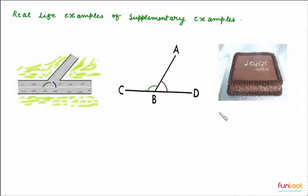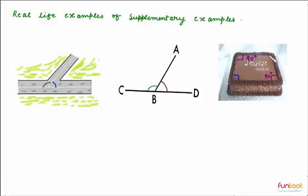Here we have a mouth-watering chocolate cake. The shape of this chocolate cake is a square, and all angles of a square are 90 degrees. So this angle and this angle will each be 90 degrees, and are supplementary because their sum is 180 degrees. We can find many other pairs of supplementary angles in this square chocolate cake — this angle and this angle, this angle and this angle, and so on. All form pairs of supplementary angles because they add up to 180 degrees.